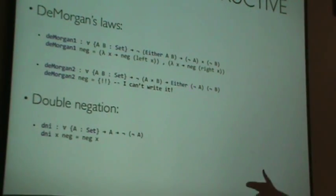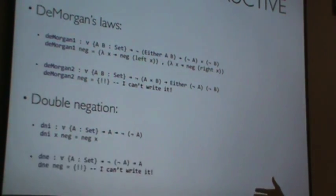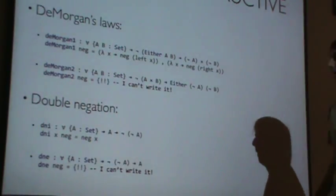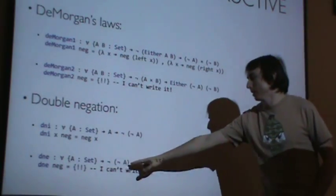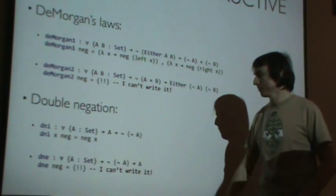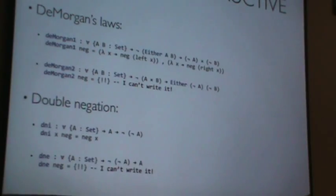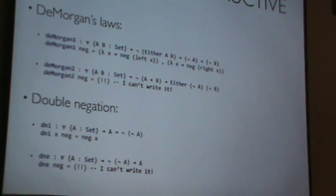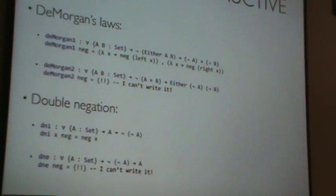However, the opposite — double negation elimination — can't be written in Agda, Haskell, or Coq without some postulates. That's simply because, as I mentioned, this is a function and I've got nothing to feed it. This isn't really all that crippling, because with both De Morgan's second law and double negation elimination, you can always add one more 'not' and it still works. So you can enter the world of classical logic by double-negating everything.